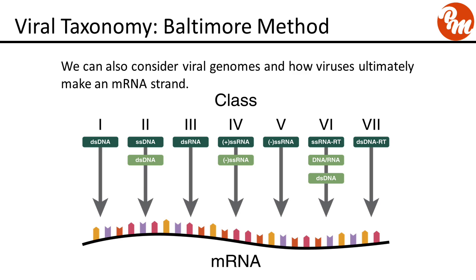Group 1 will be double-stranded DNA viruses. Group 2 will be single-stranded DNA viruses. Group 3 will be double-stranded RNA viruses. Group 4 will be the positive-sense single-stranded RNA viruses. Group 5 will be the negative-sense single-stranded RNA viruses. Group 6 will be the single-stranded RNA viruses that are retro-transcribing, and Group 7 will be the double-stranded DNA viruses that are retro-transcribing.